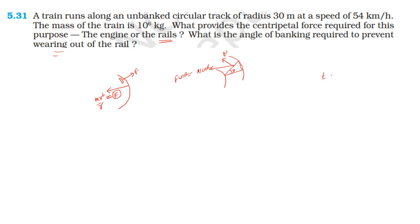Using the formula tan theta equals v squared by rg, the angle of banking theta is equal to tan inverse of v squared by rg. This gives us the required banking angle.